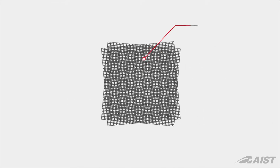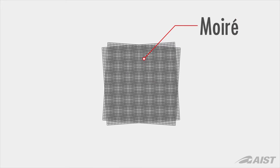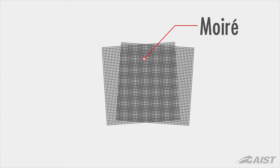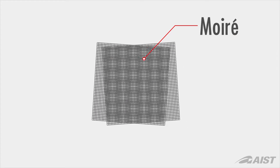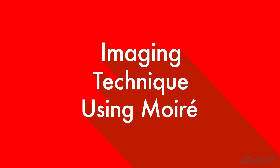A set of grating patterns placed one over the other produces a moiré fringe pattern. The moiré pattern changes as either of the grating patterns is moved. Based on this concept, we can use an imaging technique by moiré to quantitatively measure structural deformation. Let us show you how it works.